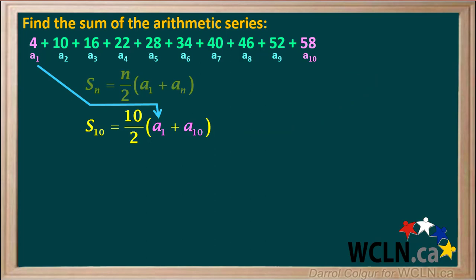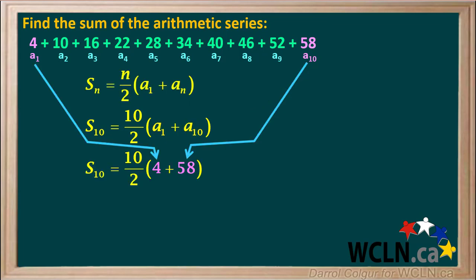We see the value of the first term, A1, is equal to 4, and the value of the last term, A10, is equal to 58. So we'll substitute 4 for A1 and 58 for A10 like this.